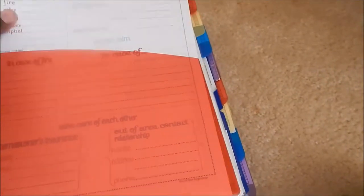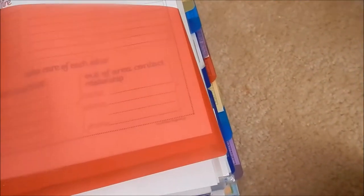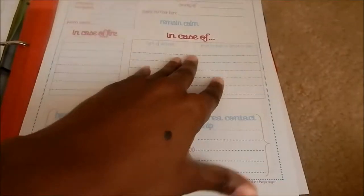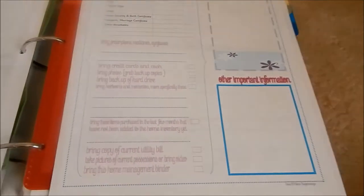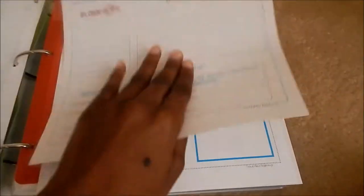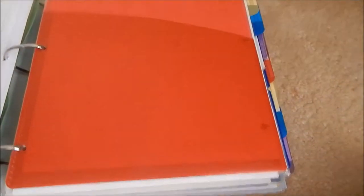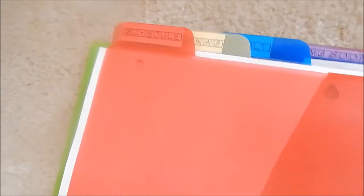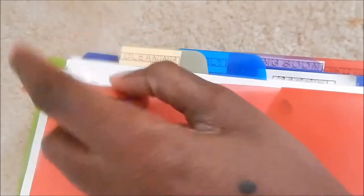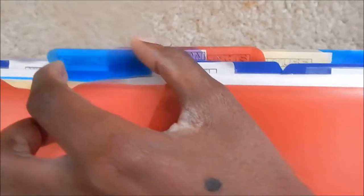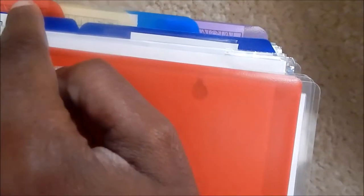Next is in case of emergency from New Beginnings, which includes an evacuation checklist. Then we get to my tabs labeled with my label maker: schedules, cleaning, family, coming soon, projects, YouTube, mail, planning, and financial.